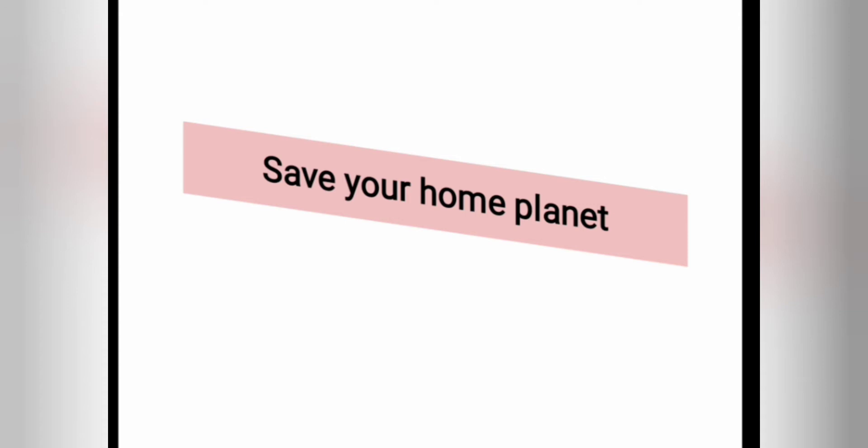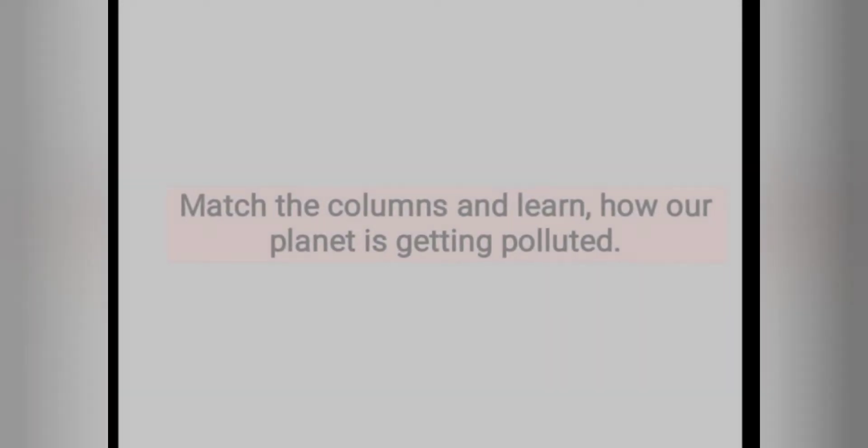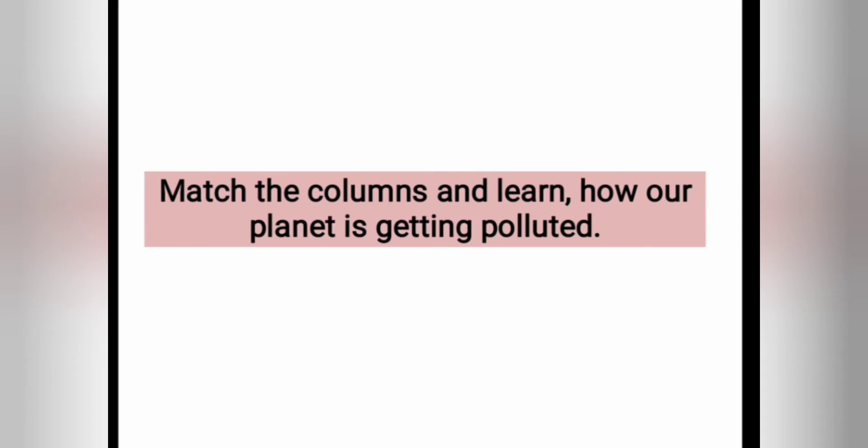Earth is our home and a most important need for the continuity of life. Man has been using and misusing natural resources. We have to create a safe environment which will be beneficial to the planet. So children, match the columns and learn how our planet is getting polluted.